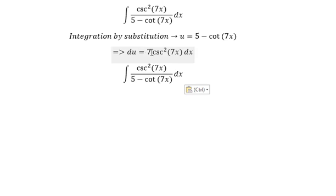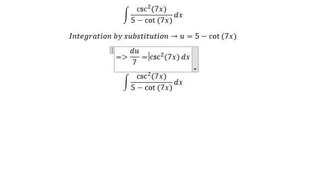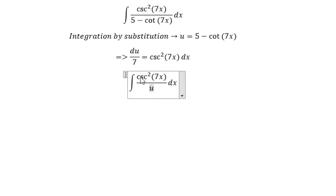Because we don't have the number 7, we divide both sides by number 7. This one we change for u, this one with dx we change for du over 7.